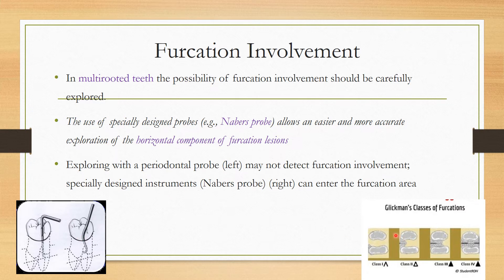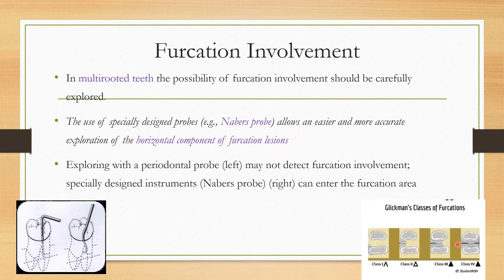Under classification, we follow Glickman's grading of furcations. Grade 1 is incipient loss of bone in the furcation area. Grade 2 is loss of one bony wall, which permits entrance of the probe inside but acts as a cul-de-sac. Grade 3 allows passage of the probe through and through, but will be covered by soft tissues. Grade 4 also allows passage of the probe through and through, but will not be covered by soft tissues.